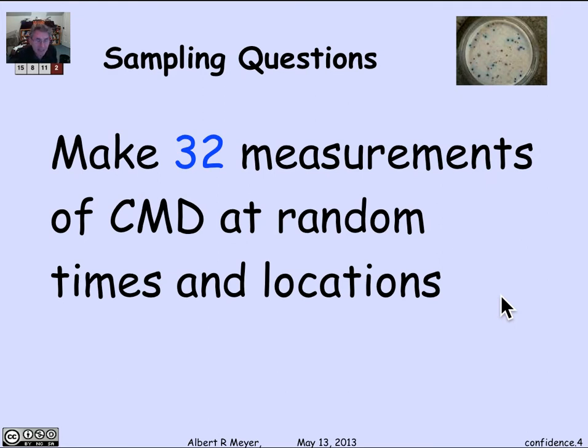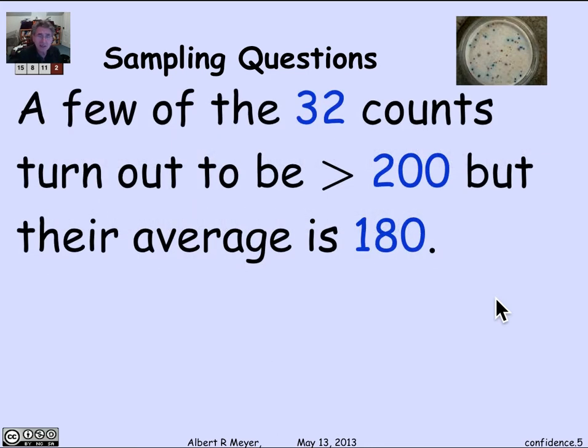We're never going to be certain, but what we're going to do is take 32 measurements at random times and locations around the river. Although a few of them are over 200, the average of the 32 samples that we've taken is 180.